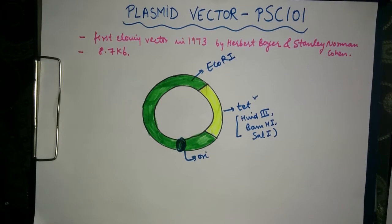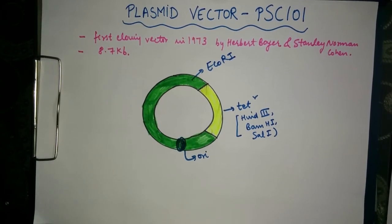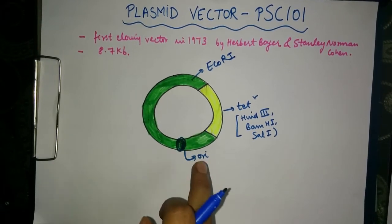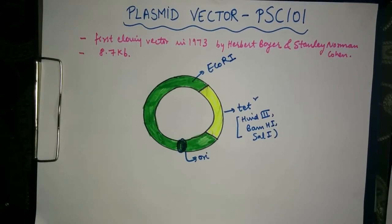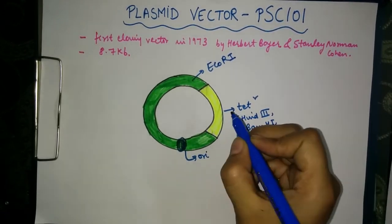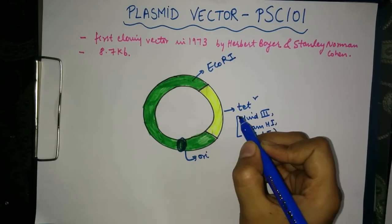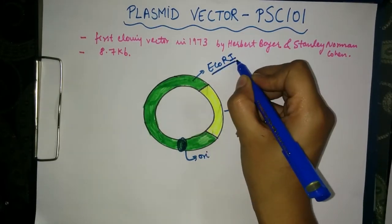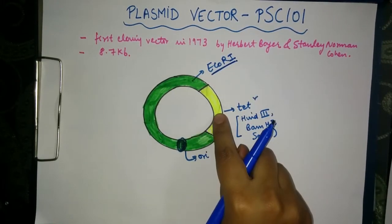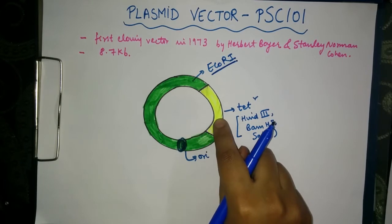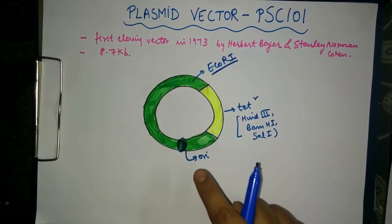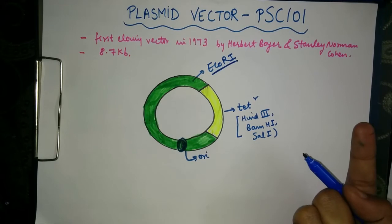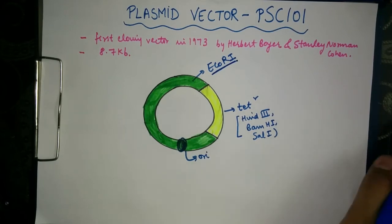As we are discussing this topic, we have to use this plasmid as a vector, so the DNA insert of our choice has to be inserted into this plasmid. If we insert the DNA into the ECO-RI site, this will leave the tetracycline gene intact and functional. Therefore, the E. coli cells transformed by PSC-101 become tetracycline resistant.